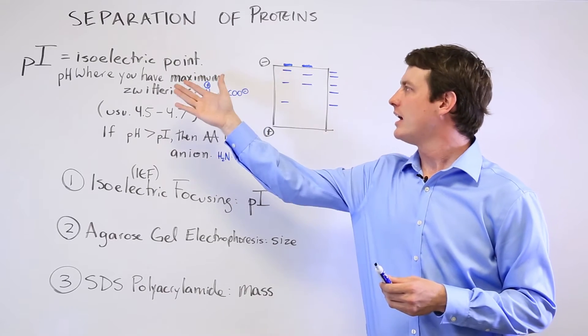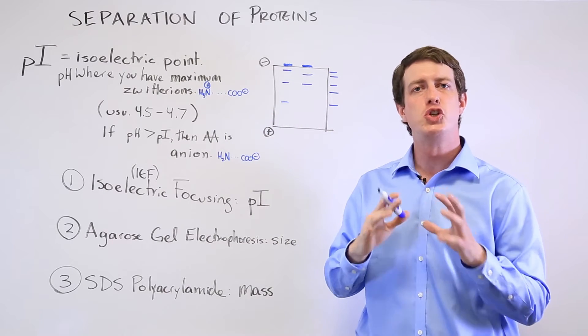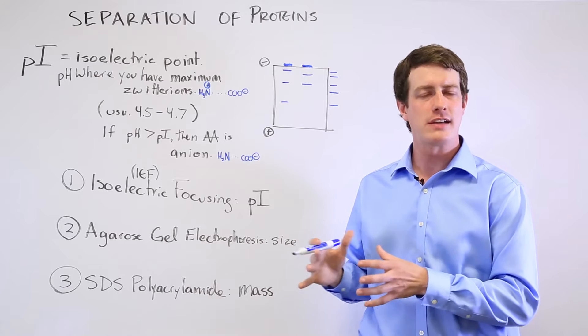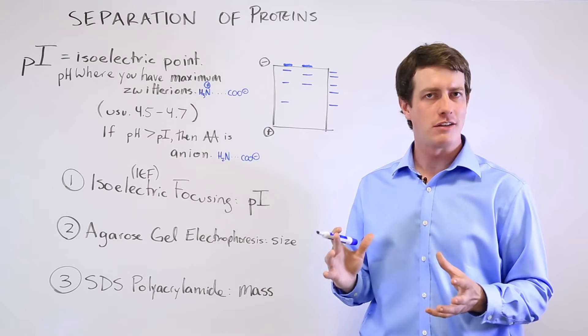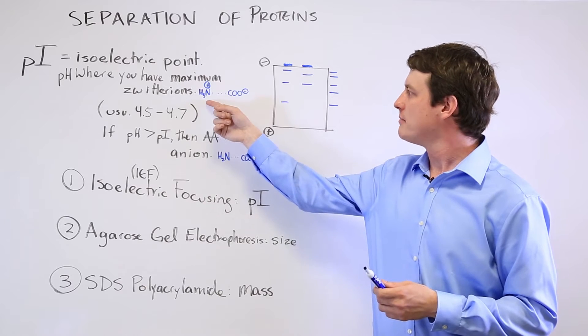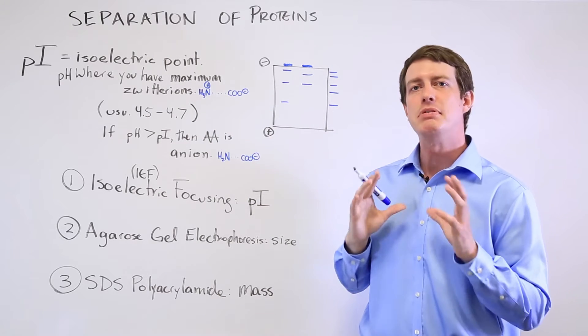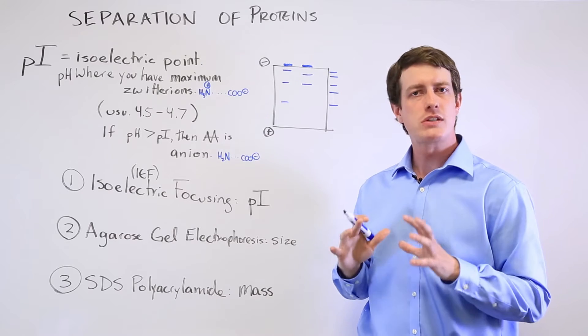The first thing to understand is the pI or the isoelectric point. That's the pH where the majority of your proteins or amino acids are in their zwitterion form, so they have no net charge. They have a positively charged amino group and a negatively charged carboxyl group. The pI is where you have the most zwitterions.